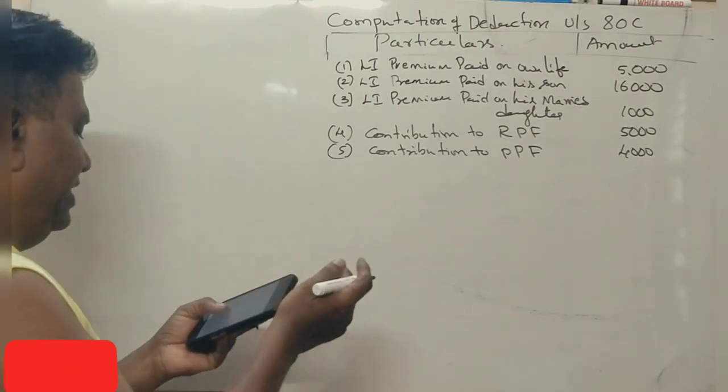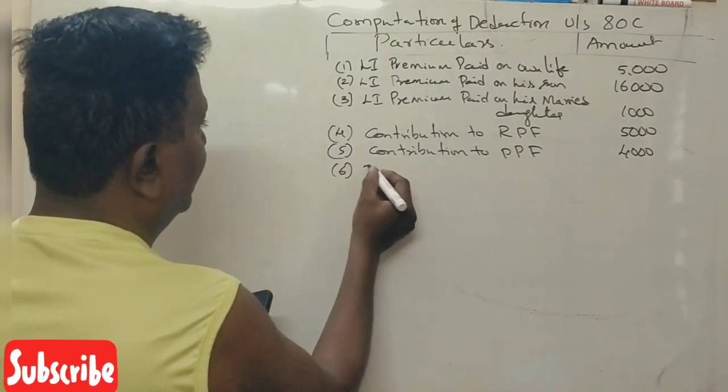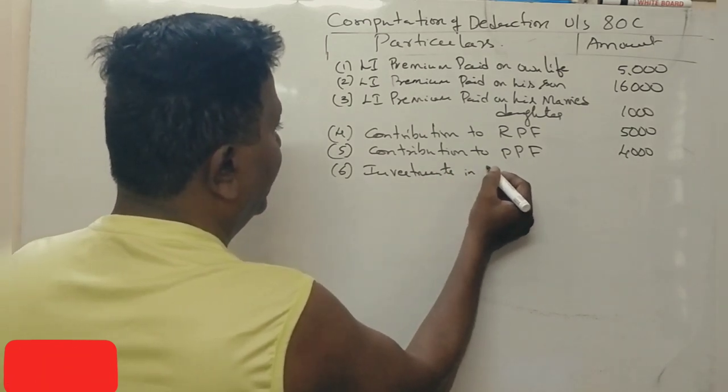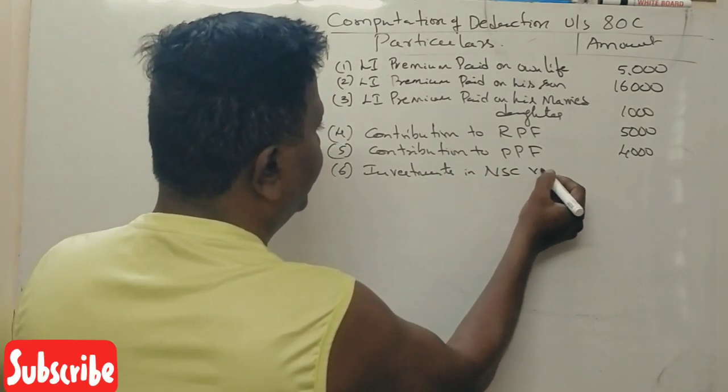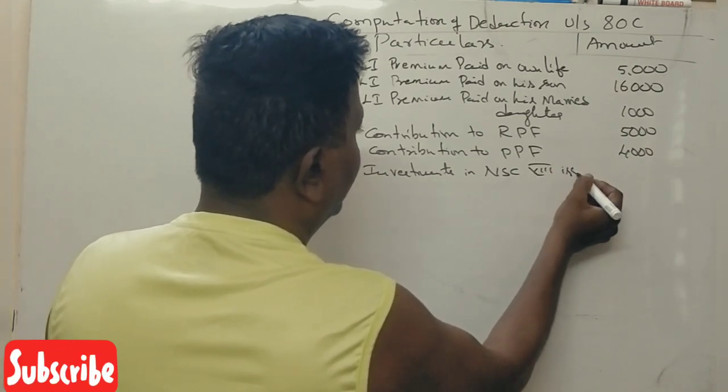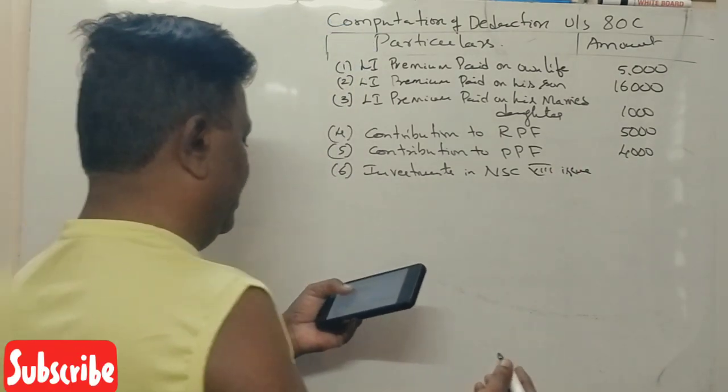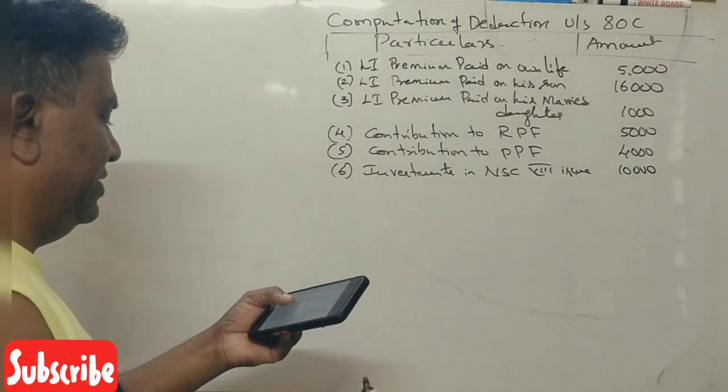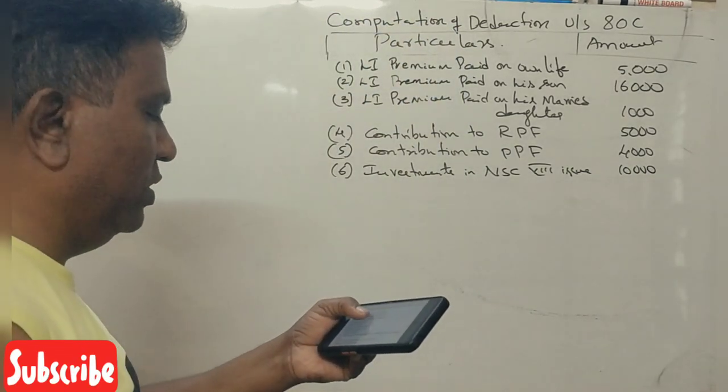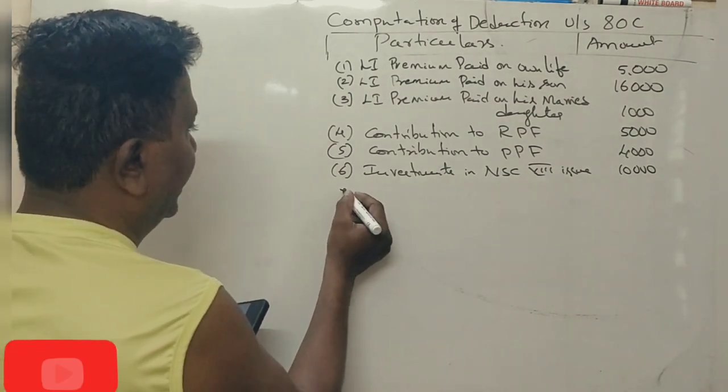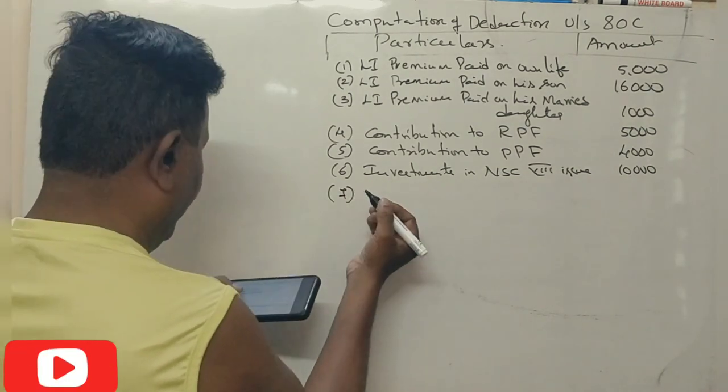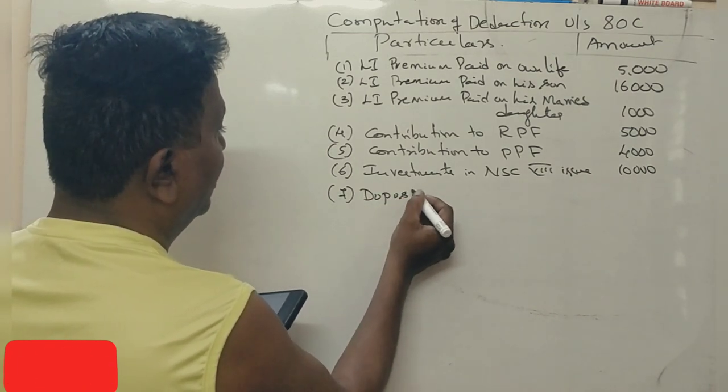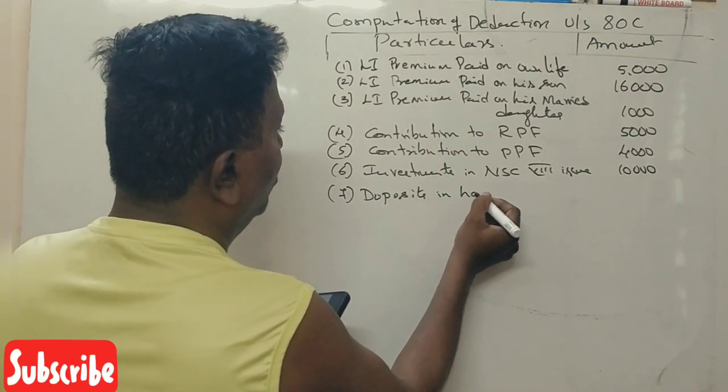Investments in NSC 8th issue, rupees 10,000. Next, deposits in home loan account, 8,000. So deposits in home loan account.